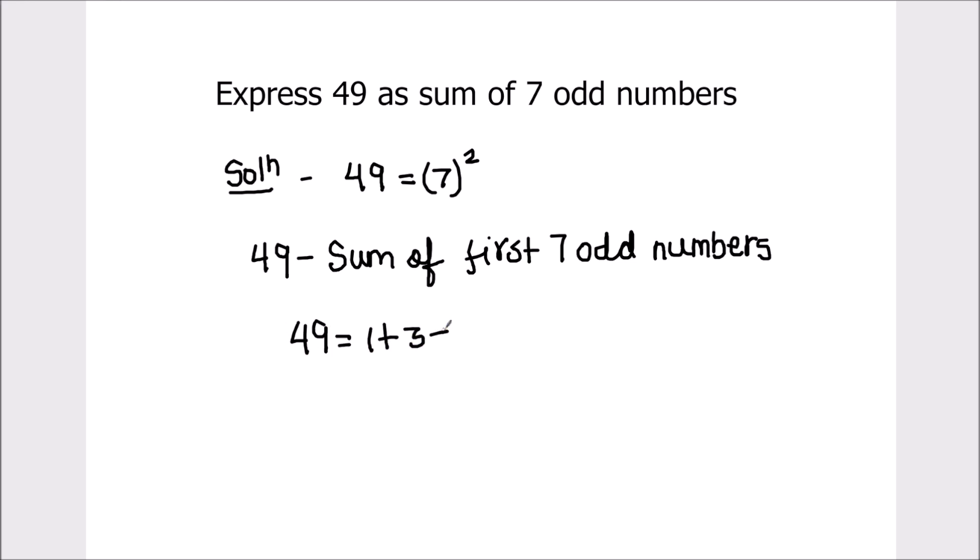3 plus 5 plus 7 plus 9 plus 11 plus 13. So these are the first 7 odd numbers and if we add them, we'll get number 49.